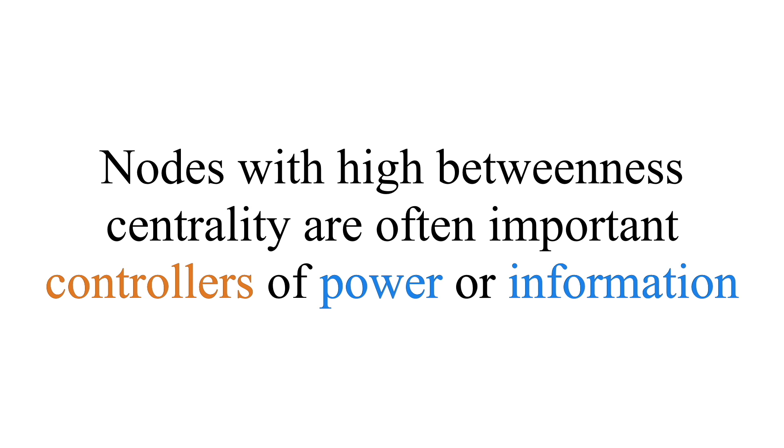These people are often very important when looking at influence or how information is disseminated across the network. Betweenness centrality is a linchpin measure for looking at things like brokerage in the network. If important information exists in different regions of the network, people with high betweenness centrality unify the network, and those people have brokerage roles that may be very important.